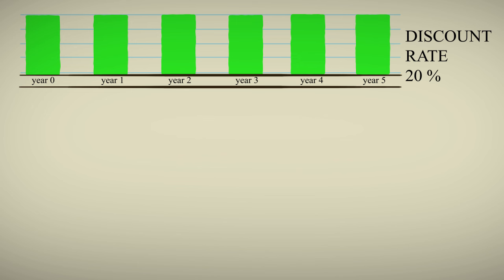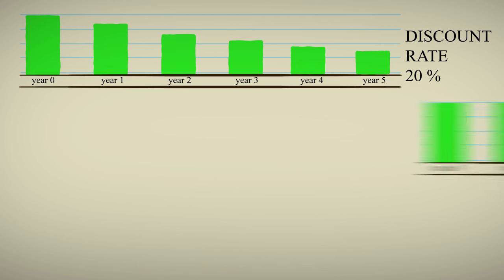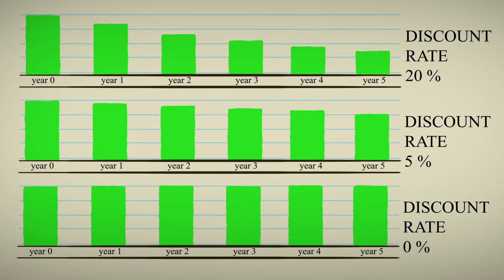Remember, with a higher discount rate, less weight is given to the future. With a lower discount rate, more weight is given to the future. A discount rate of zero would imply that the future has the same weight as the present.